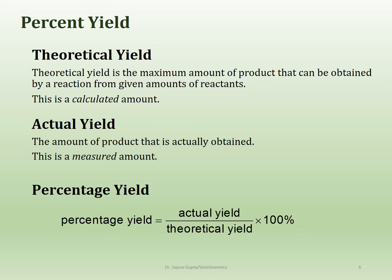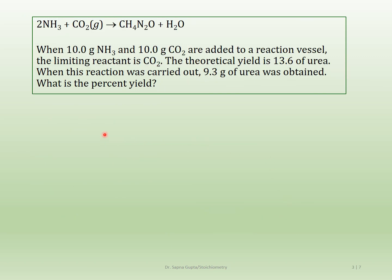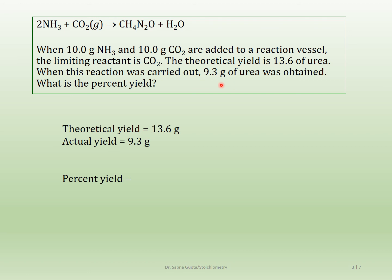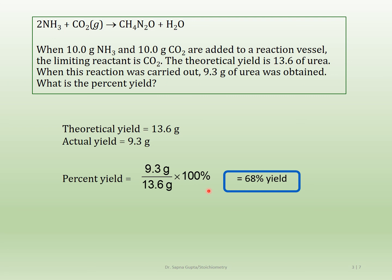Let's do a percent yield problem using the same urea reaction: 10 grams of ammonia and 10 grams of carbon dioxide, with carbon dioxide as the limiting reagent as determined before. The theoretical yield is 13.6 grams. When this reaction is actually carried out, 9.3 grams of urea was obtained — that is the actual yield. So the percent yield = (9.3 / 13.6) × 100%, which gives us 68% yield.